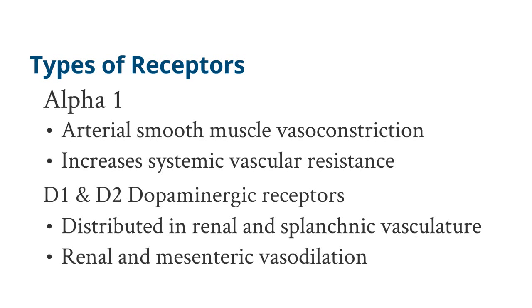The dopamine receptors include the D1 and D2 receptors. They're distributed throughout the renal and splenic vasculature. When activated, they cause renal and mesenteric vasodilation. Now we'll go over the effects of dopamine and its effects on dopaminergic receptors.